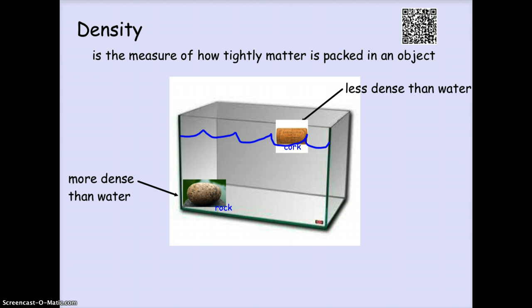Another way to describe matter is by looking at the density of an object or substance, and density is the measure of how tightly packed matter is in an object. When you find that something has less density than water, for instance this cork, it tends to float. And then if something's more dense than water, it will sink. Think about those toys that you used to put in the bathtub when you were younger.